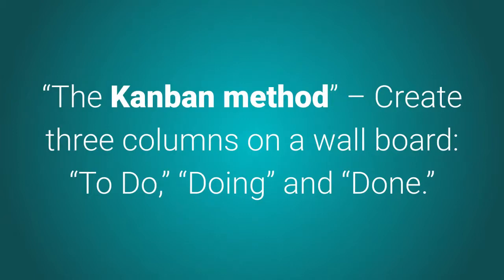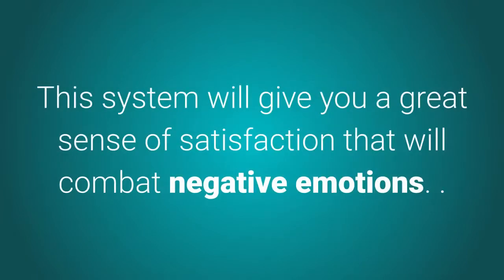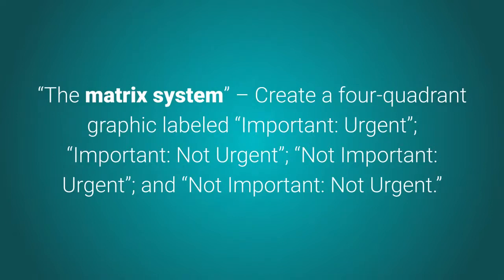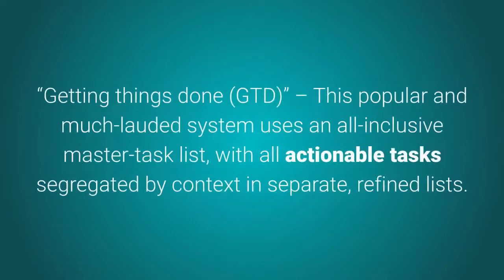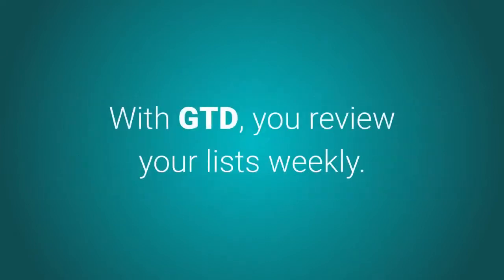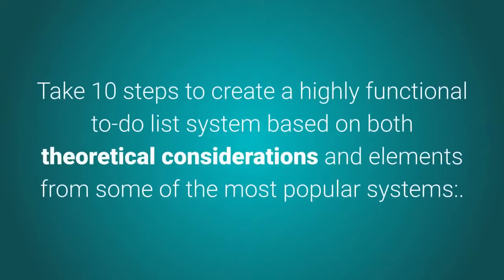The eighth system: the Kanban method — create three columns on a wall board labeled 'To-Do,' 'Doing,' and 'Done.' List each task on a separate sticky note, and as you work on tasks, move the note from one column to the next. This gives you a great sense of satisfaction that combats negative emotions. The ninth system: the matrix — a four-quadrant graphic labeled important-urgent, important-not-urgent, not-important-urgent, and not-important-not-urgent; assign tasks to their relevant quadrants. The tenth system: Getting Things Done (GTD) — an all-inclusive master task list with actionable tasks segregated by context into refined lists, reviewed weekly, including a next-actions list and a someday-maybe list.